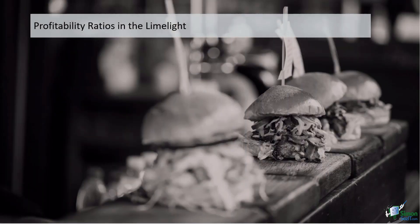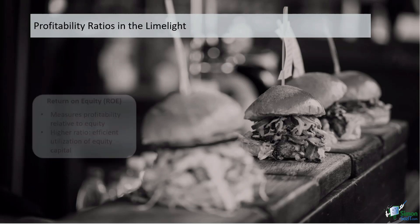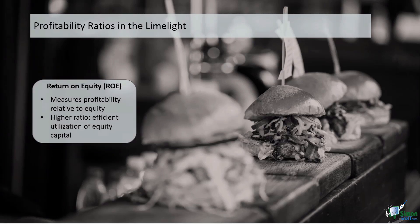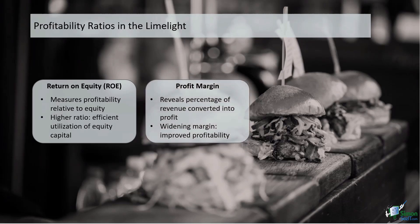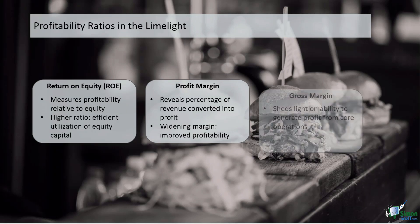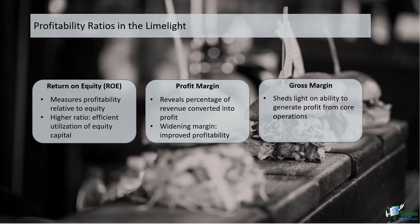Let's take a look at some profitability ratios. The return on equity measures the profitability of Sandmart relative to its equity — a higher ROE suggests efficient utilization of equity capital. Examining Sandmart's profit margin reveals the percentage of revenue that translates into profit, where a widening margin signifies improved profitability. The gross profit margin sheds light on Sandmart's ability to generate profits from its core operations.